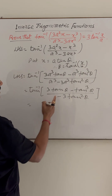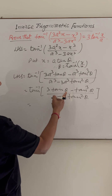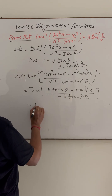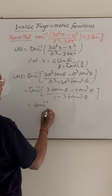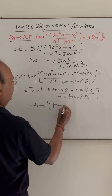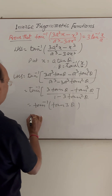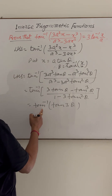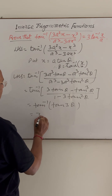We know this is the formula of tan 3θ. So this is equal to tan inverse of tan(3θ), and tan inverse of tan(3θ) equals 3θ.